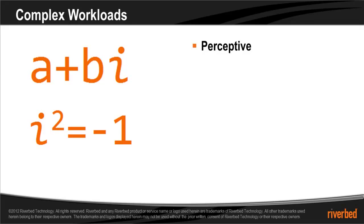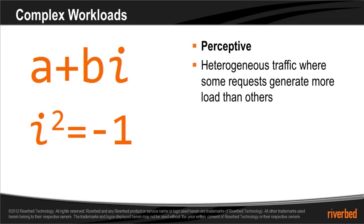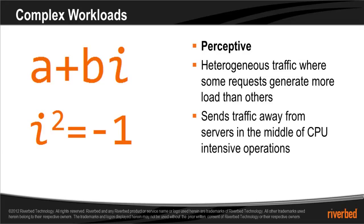For a more complex workload, where some requests generate more load than others, it's recommended to use the perceptive algorithm. The perceptive algorithm will send traffic away from servers that are in the middle of CPU-intensive operations. It does this by factoring in response time — servers in the middle of CPU-intensive operations will begin to respond slower, triggering the perceptive algorithm to begin directing traffic away from those servers.